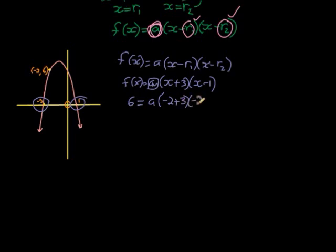So we replace x with negative 2, and then we find that a times negative 2 plus 3, positive 1, and negative 2 minus 1 is negative 3, so positive 1 times negative 3 gives me negative 3, which means that a must equal negative 2.